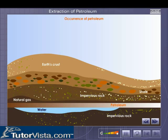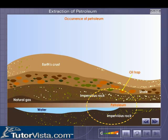Petroleum occurs in nature in the permeable reservoir rocks capped by the impermeable rocks that prevent it from leaking out to the surface of the earth. Such geological structures are called oil traps. These could be present onshore or offshore under the sea. Petroleum occurs along with salt water and pressurized natural gas below the impervious rock layers in the porous rock strata, some 500 to 5000 meters in the interior of the earth. Observe the diagrammatic view of an oil trap shown here.